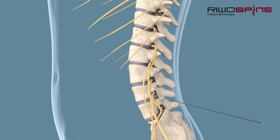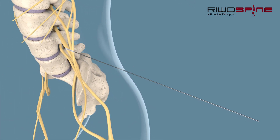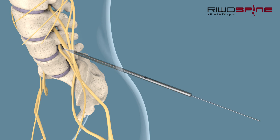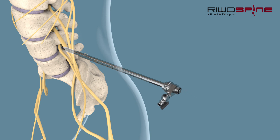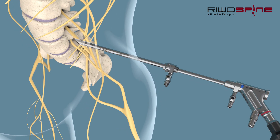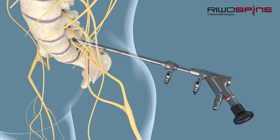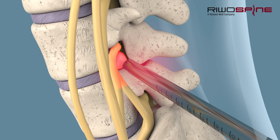First, a guide wire is used to ensure the correct positioning of the instruments. Thanks to special instruments and devices such as the dilator and working sleeve, this procedure offers the most minimally invasive approach compared with conventional methods. An essential component is the endoscope, which guarantees optical control of the treatment at all times. This allows the procedure to be performed safely and least invasively.